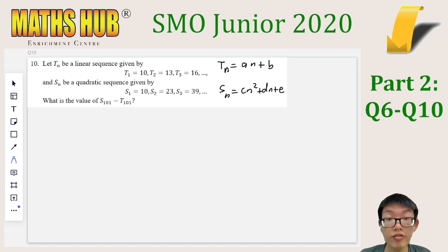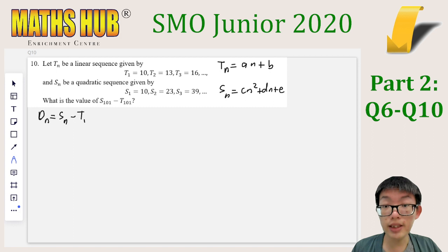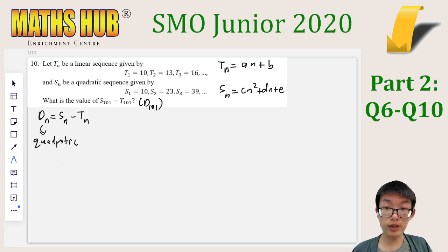However, there is an alternative approach to deal with this question using the properties of quadratic sequences. Now, first things first, we can come up with a new auxiliary sequence. Let's call this new auxiliary sequence D, and D will be the difference between S and T, such as in what we want, that would now be D101. Now, Dn is still going to be a quadratic sequence because a quadratic minus a linear expression is still quadratic. The benefit of doing this is we now only need to focus on one sequence instead of two.